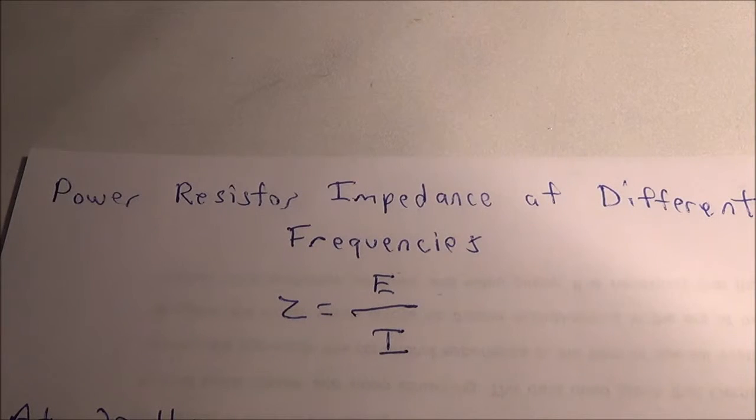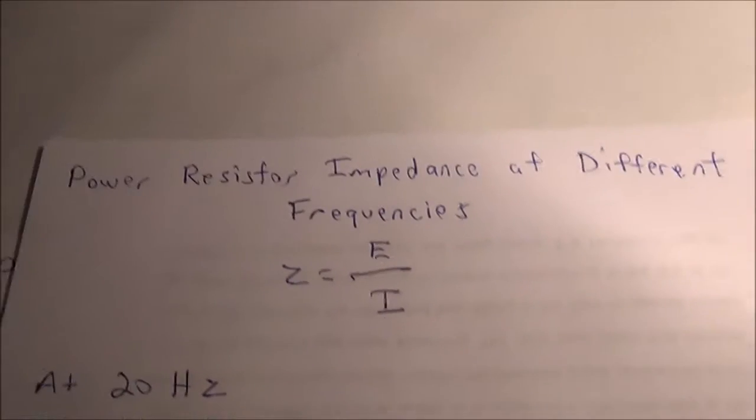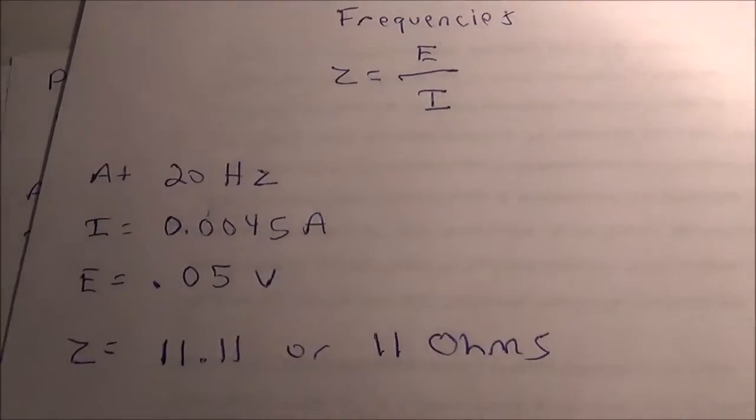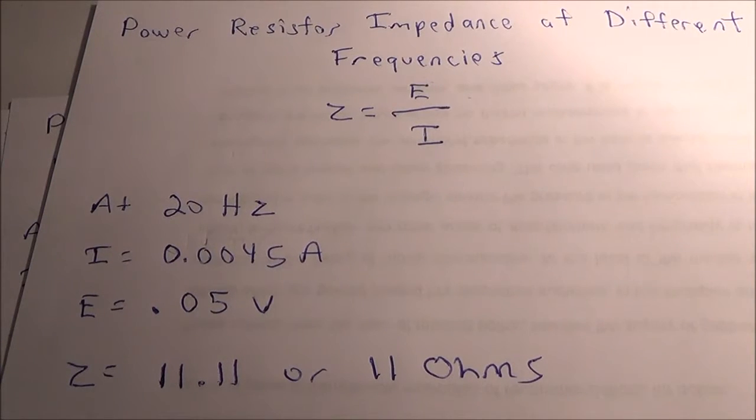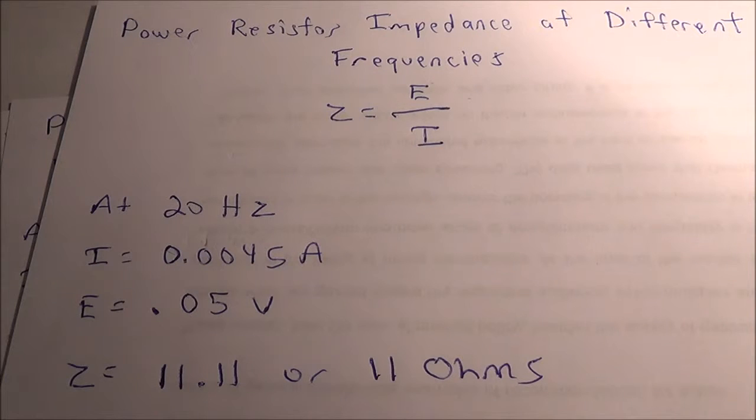Here's my scratch sheet. The formula I'm using is Z equals E over I, where E is the AC voltage and I is the AC amperes. Here's what I got for 20 hertz: I had 0.0045 amperes (4.5 milliamperes) and 0.05 volts (50 millivolts). After I plugged it all in, it came out to 11.11 or 11 ohms.